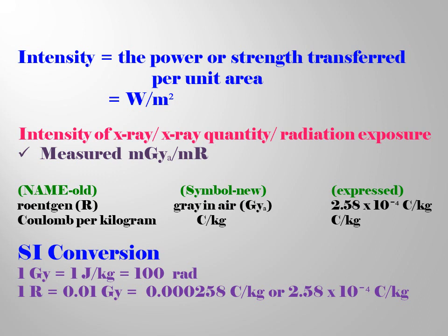1 joule per kg also equals 0.000258 C per kg, or 2.58 multiplied by 10 raised to the power of negative 4 C per kg.